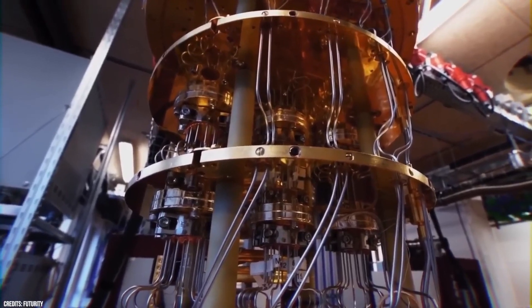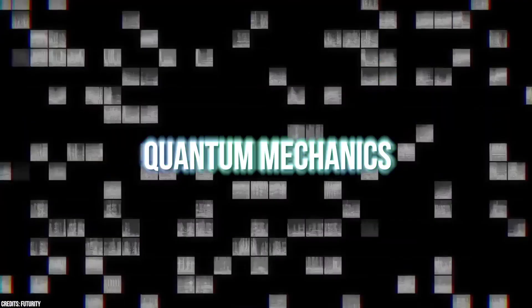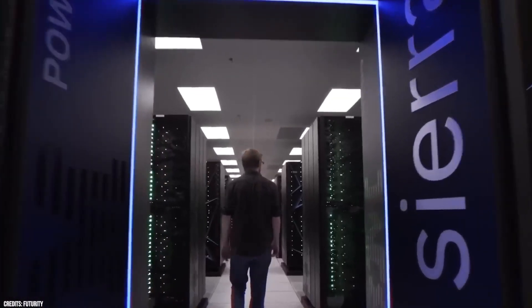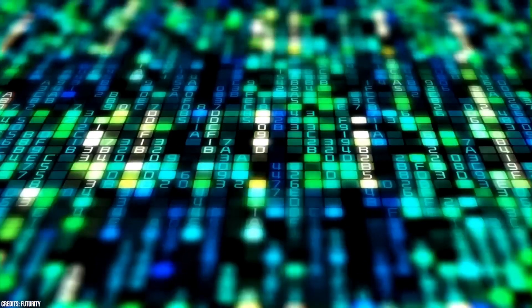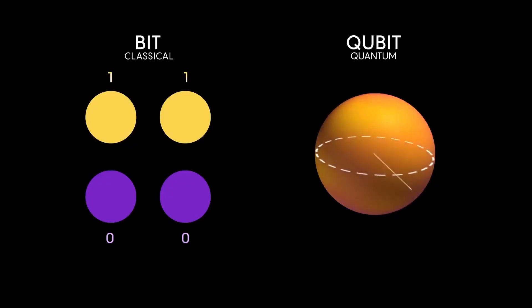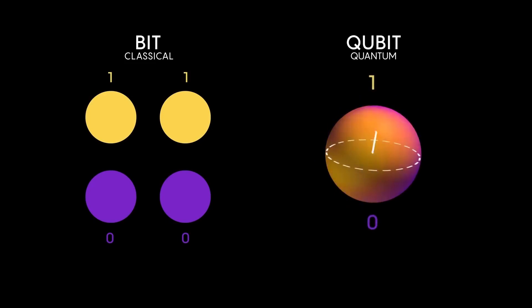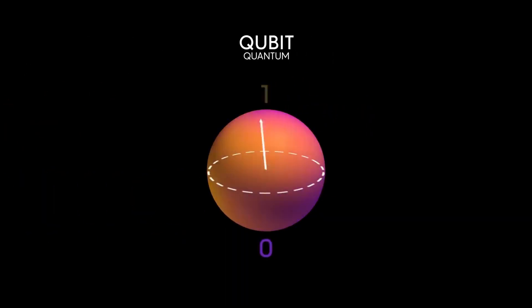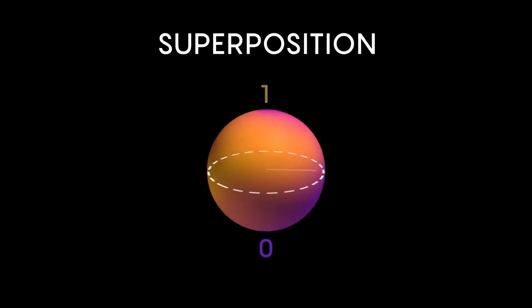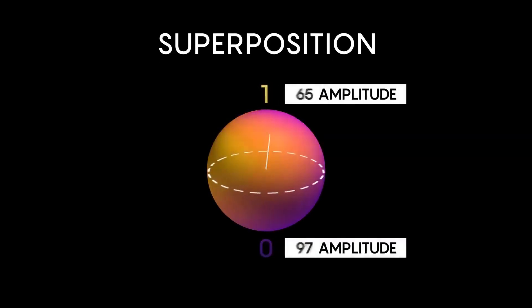Quantum computers are captivating machines that rely on the principles of quantum mechanics to perform computations. Unlike traditional computers that use bits to represent information as zero or one, quantum computers employ quantum bits or qubits, which can represent information as zero and one simultaneously. This property, known as superposition, allows quantum computers to perform complex calculations in parallel, potentially offering exponential speed-up compared to classical computers.